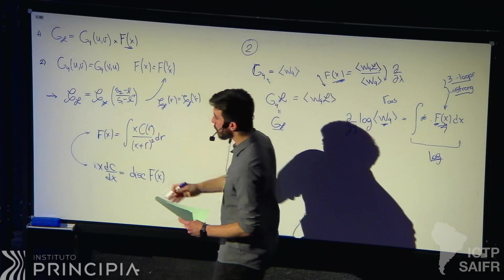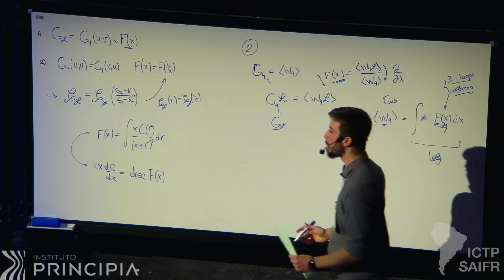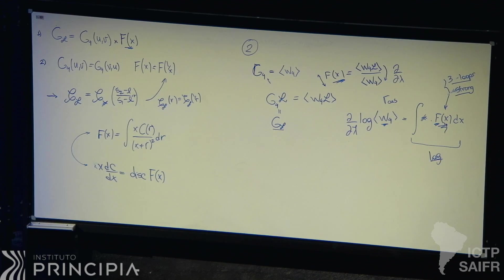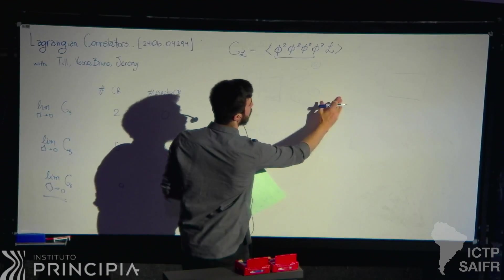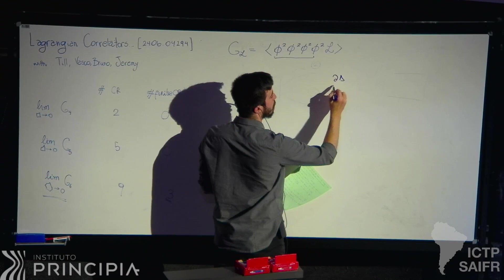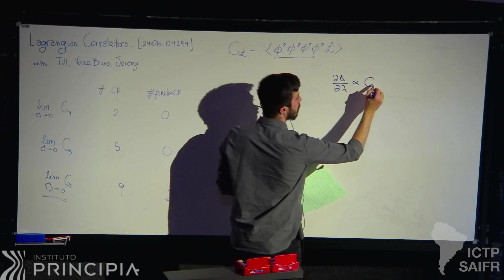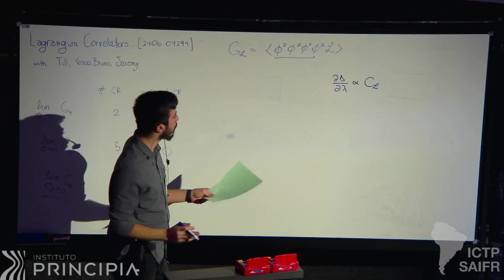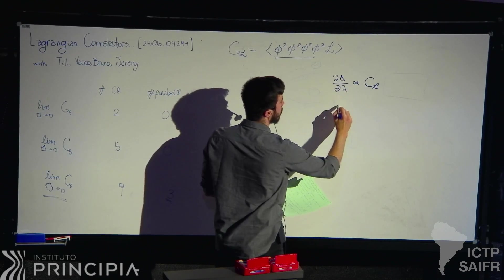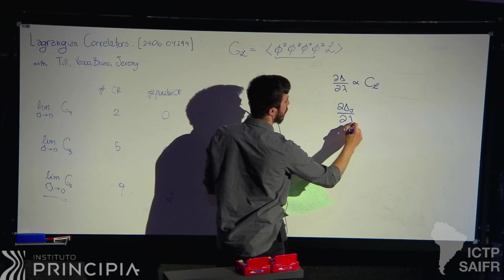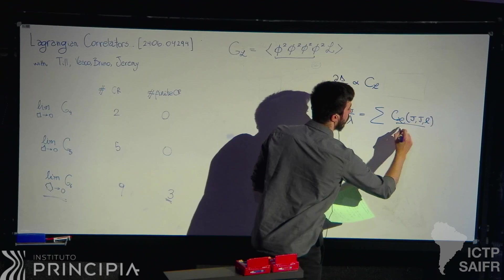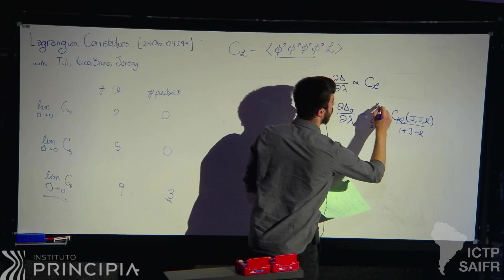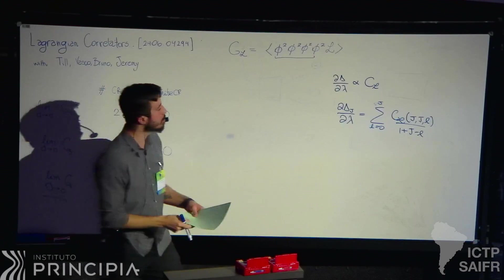Now that we have a map between this structure constant and f(x), the main result I want to present is that this structure constant with the Lagrangian is related to gamma_cusp by a very simple map. We know that the derivative with respect to the coupling is proportional to this structure constant with the Lagrangian — this is just conformal perturbation theory. More precisely, the derivative of the dimension of two spinning operators with respect to lambda is equal to the structure constant with the Lagrangian when the spins are the same, with some particular combination.